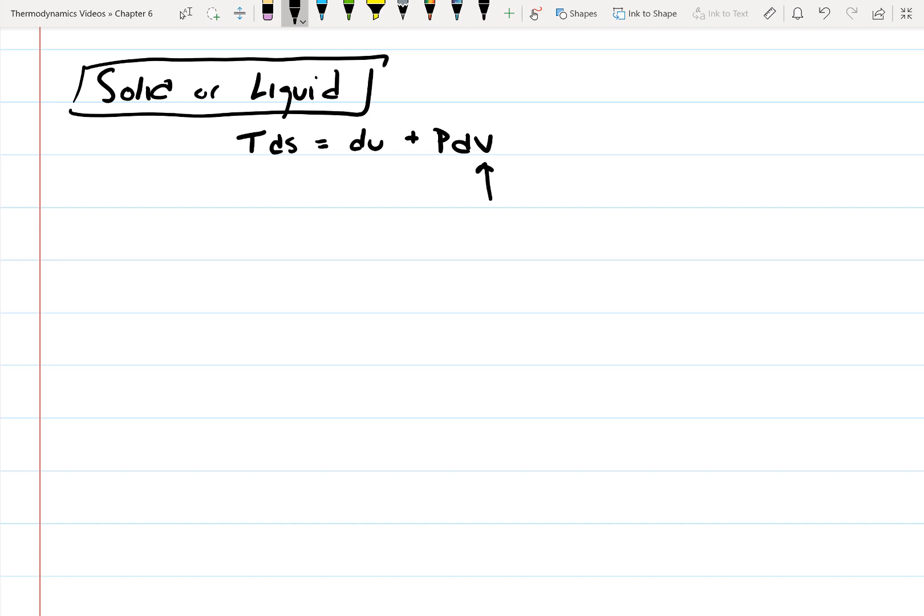And what I want to point out with this is, first of all, the specific volume is normally really small for a solid or liquid. This is just the inverse of the density. And also, if we're dealing with a solid or a liquid, it's often incompressible.